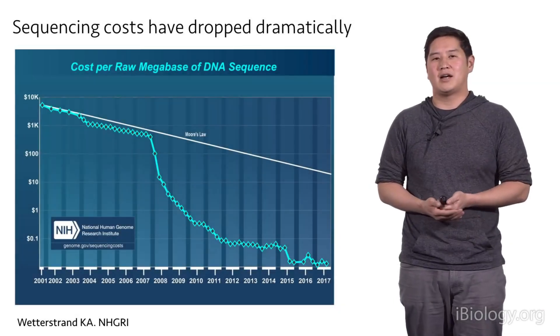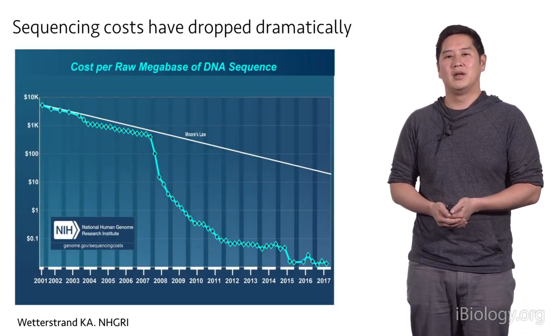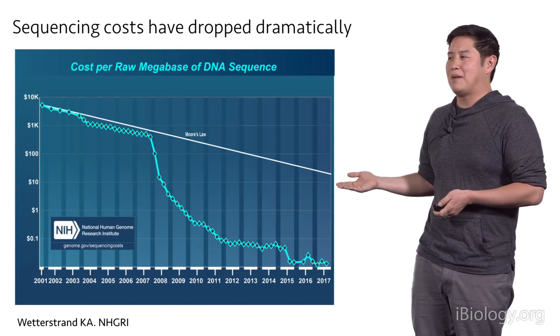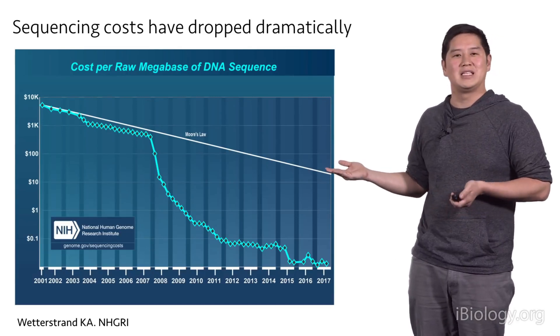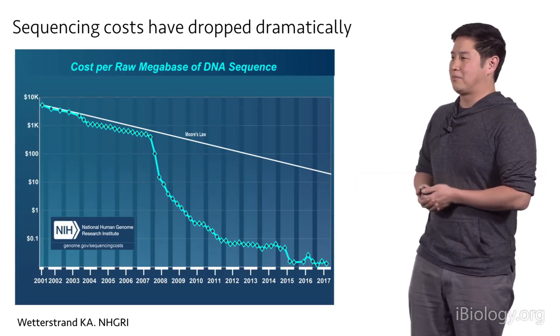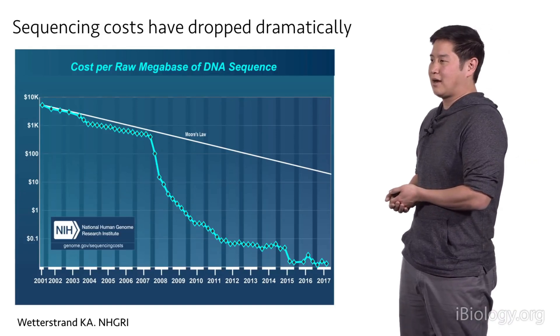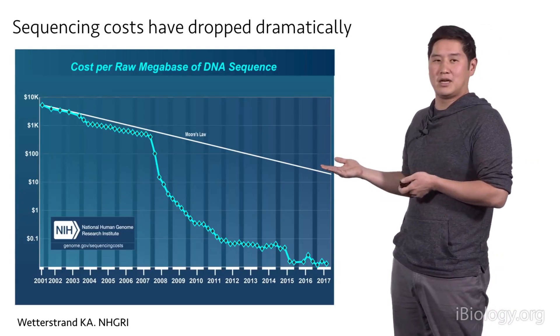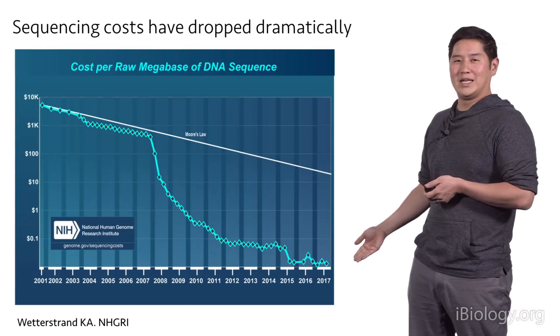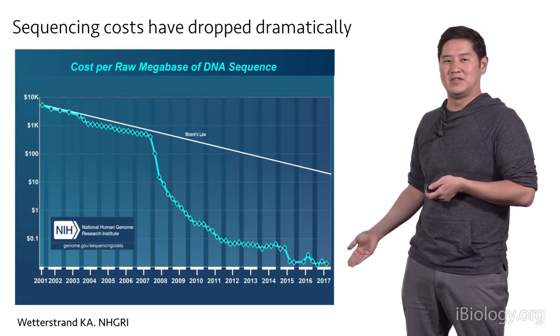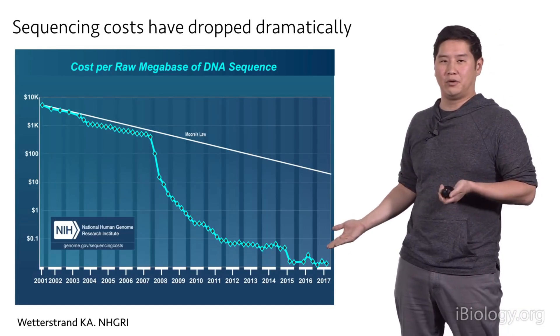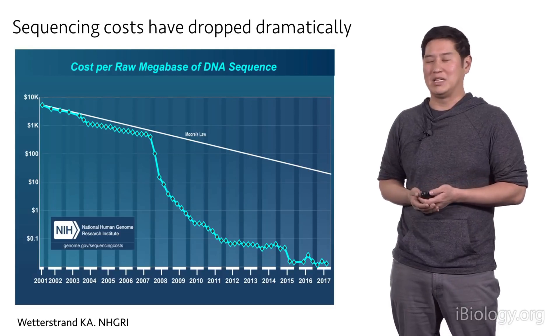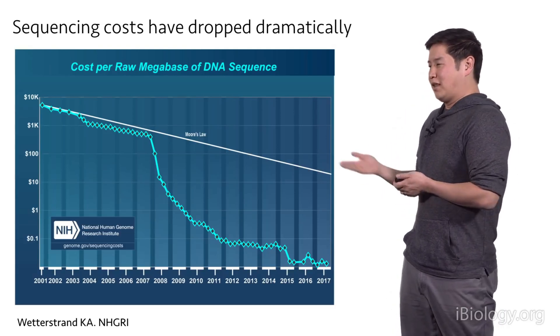The past two decades, the cost of sequencing has dropped dramatically. Over here is a chart showing you how much it costs to sequence one million bases of DNA. When the Human Genome Project completed in 2001, it cost almost $10,000. Today, we are approaching one cent to sequence a million bases of DNA, which represents a one million fold drop in the cost of sequencing.